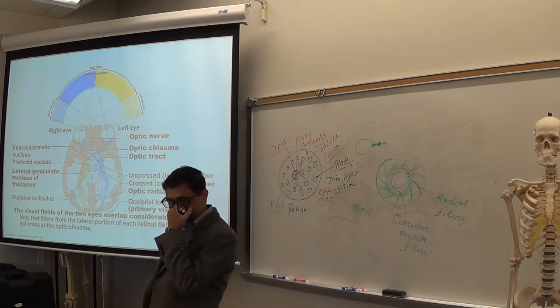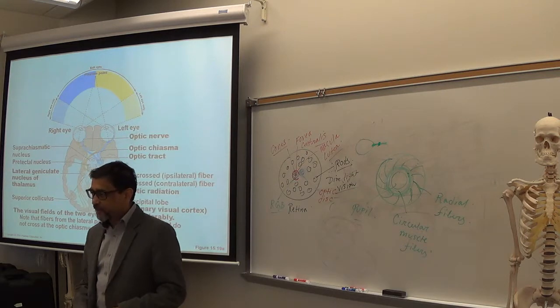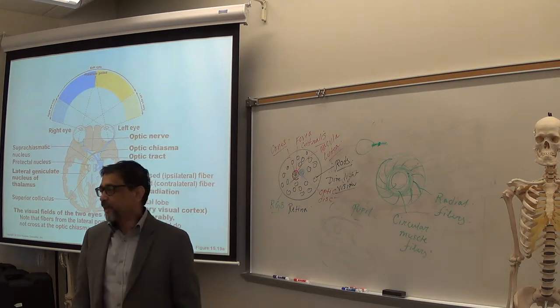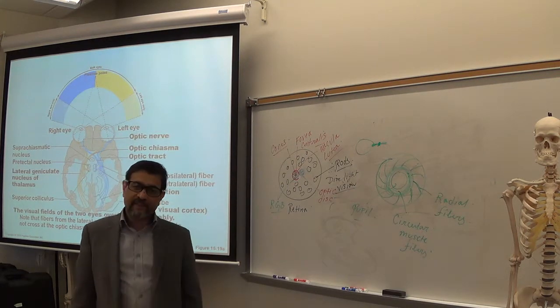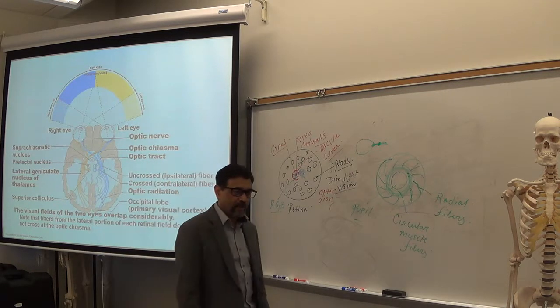That's the pathway. Retina, optic nerve, optic chiasma, optic tract, thalamus, right? Optic radiation, and primary visual cortex.